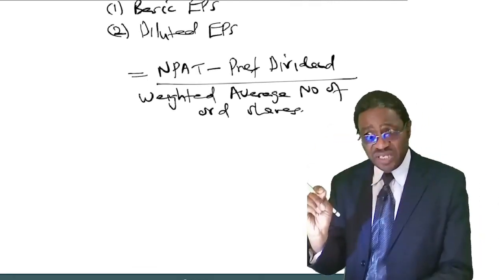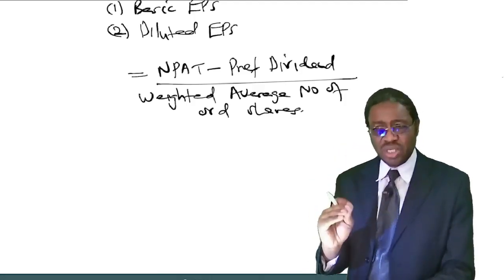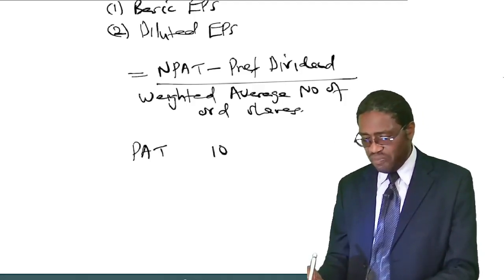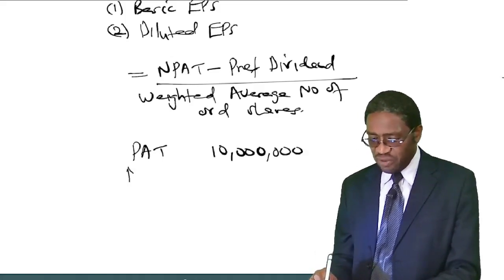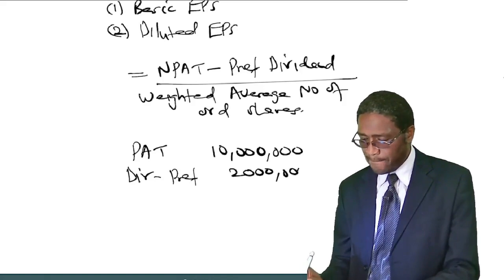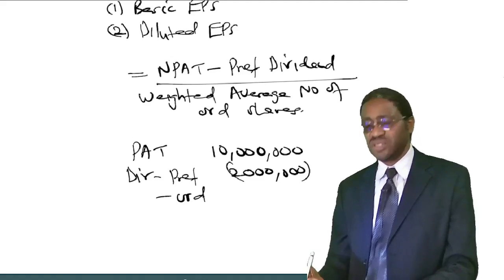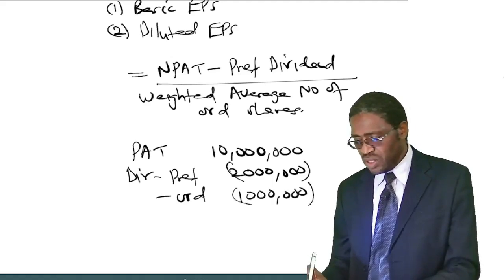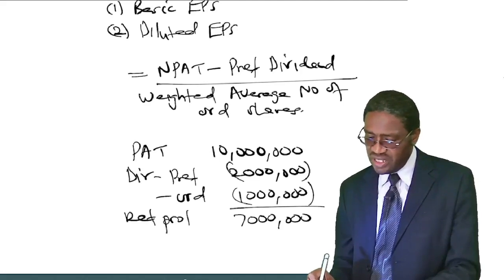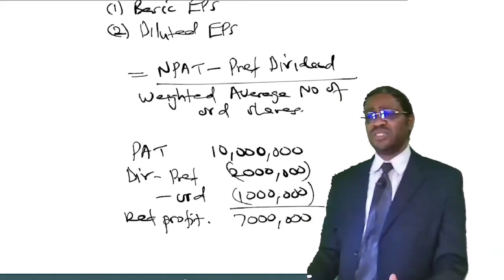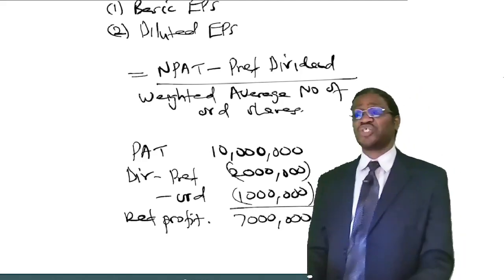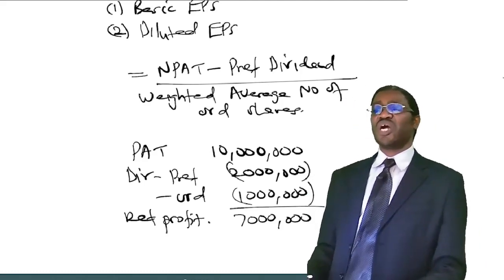Suppose you are given an extract of an income statement. The profit after tax is $10 million, preference dividends are $2 million, ordinary dividends paid are $1 million, and retained profit is $7 million. This company has two types of shareholders: ordinary shareholders and preference shareholders.